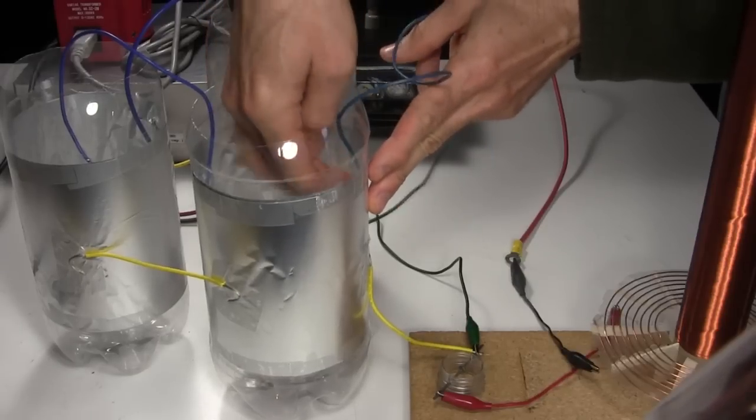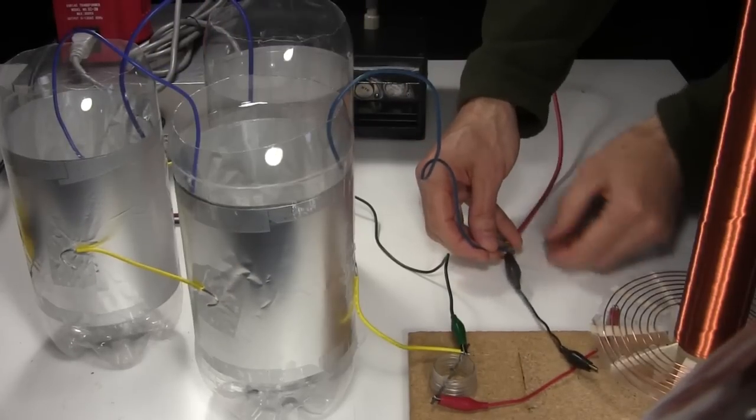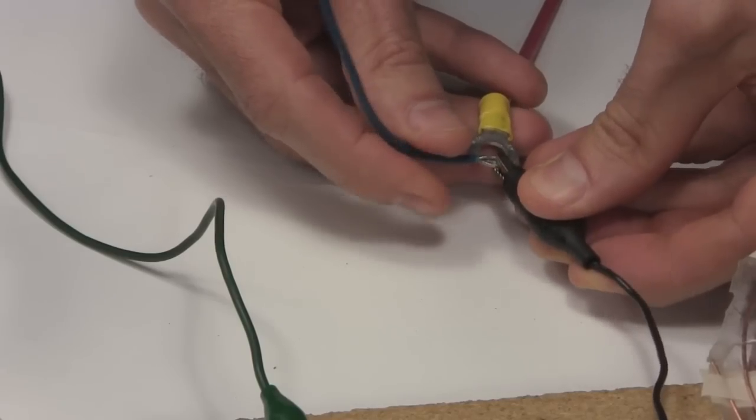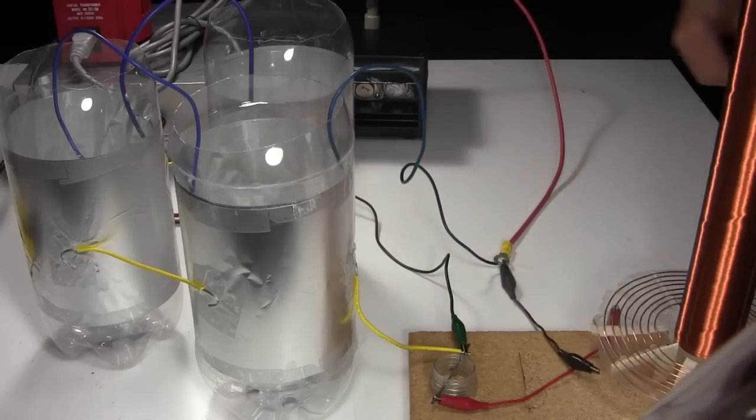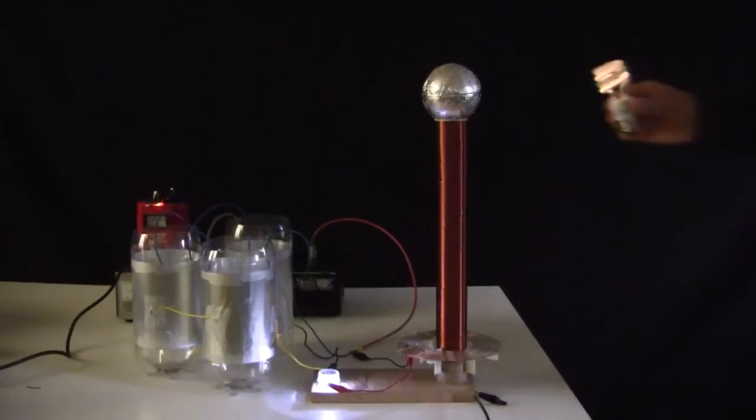Then another wire is taped to an inner electrode and then connected to the power supply's high voltage positive side that also goes to the Tesla coil. Ready to test. After tuning it, I try out the usual things.